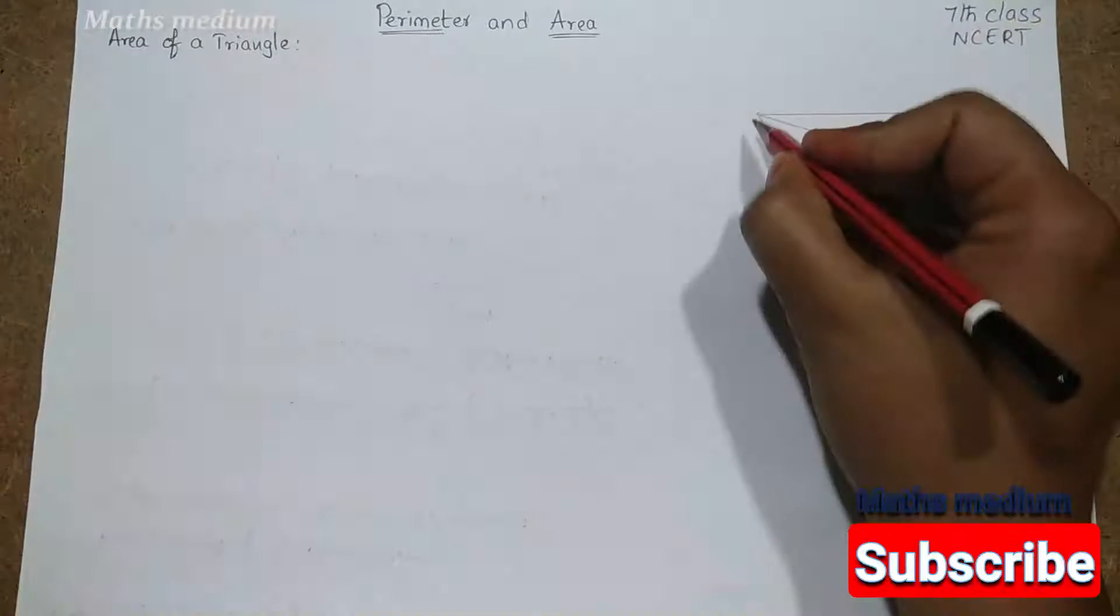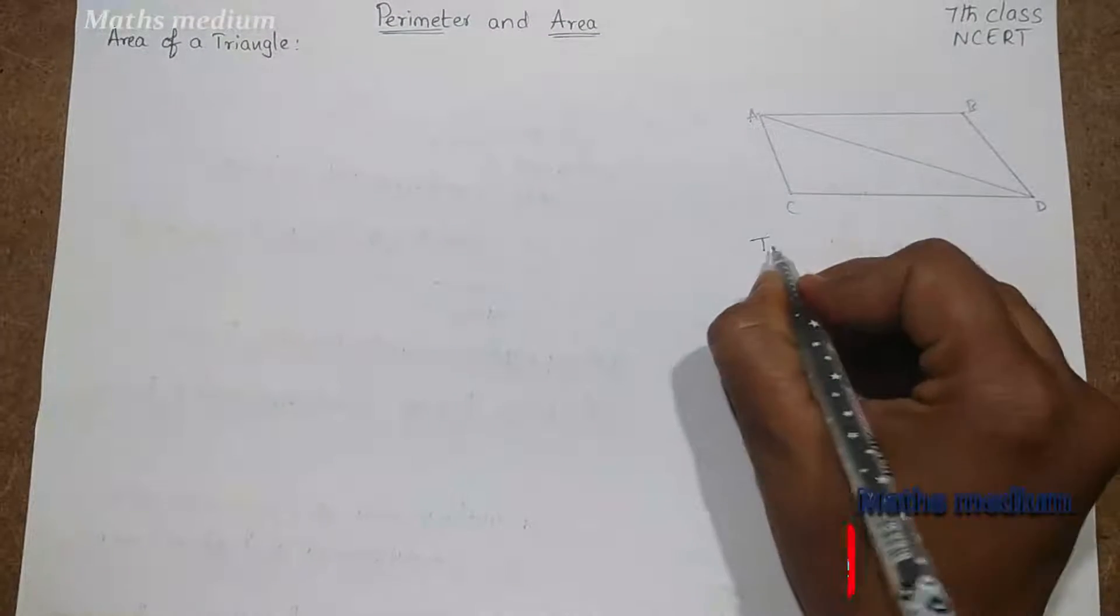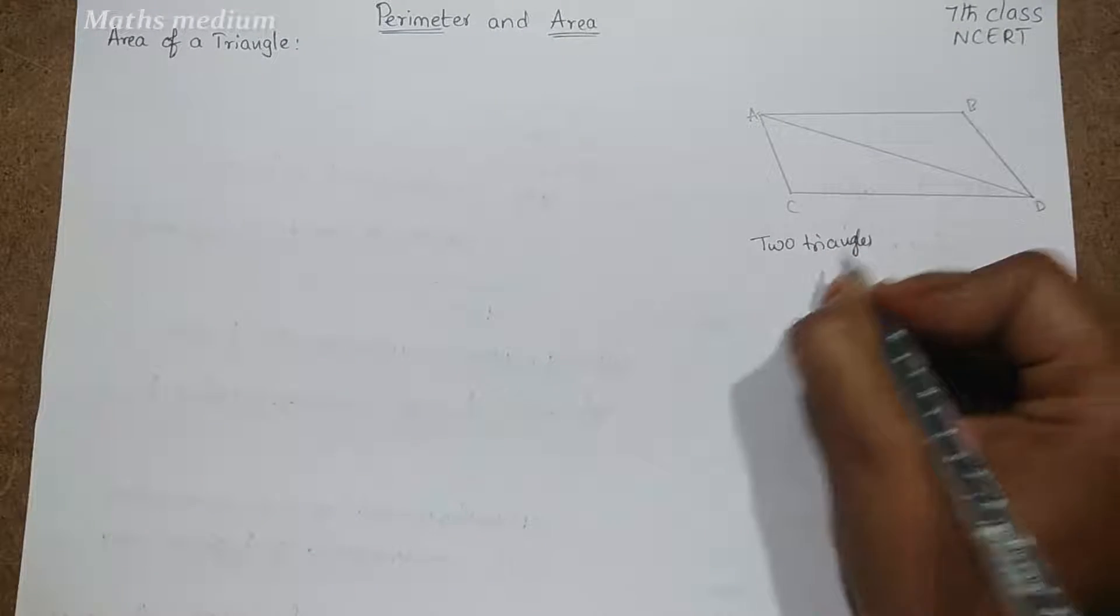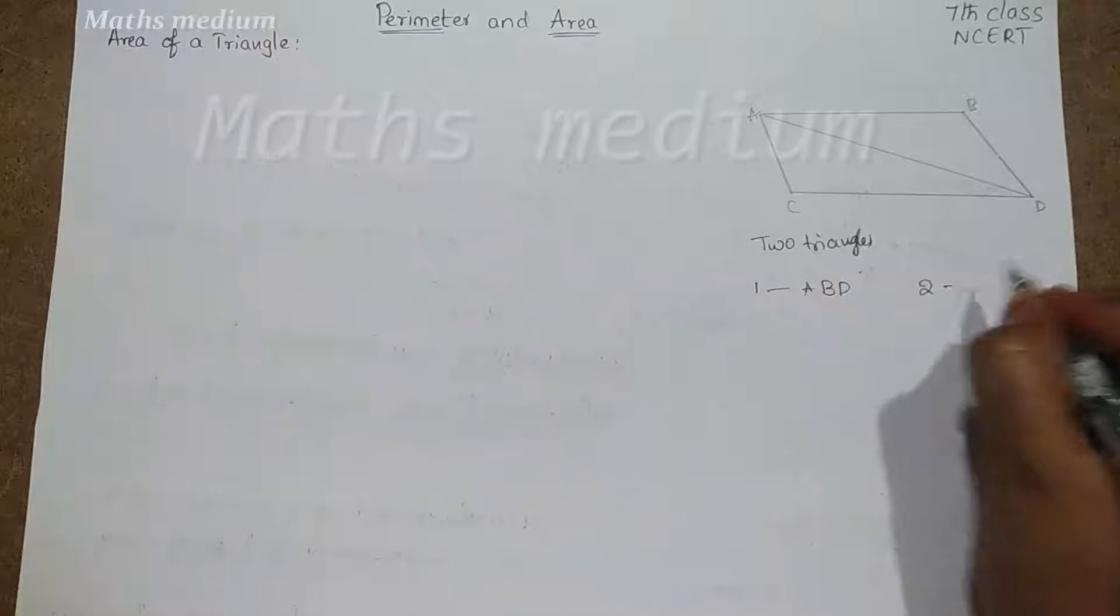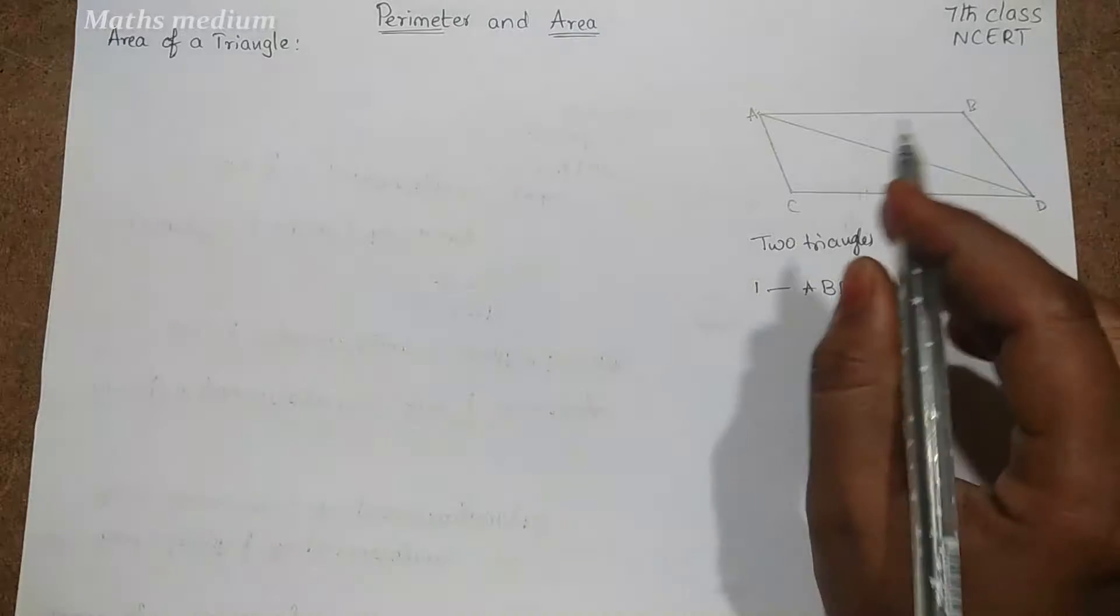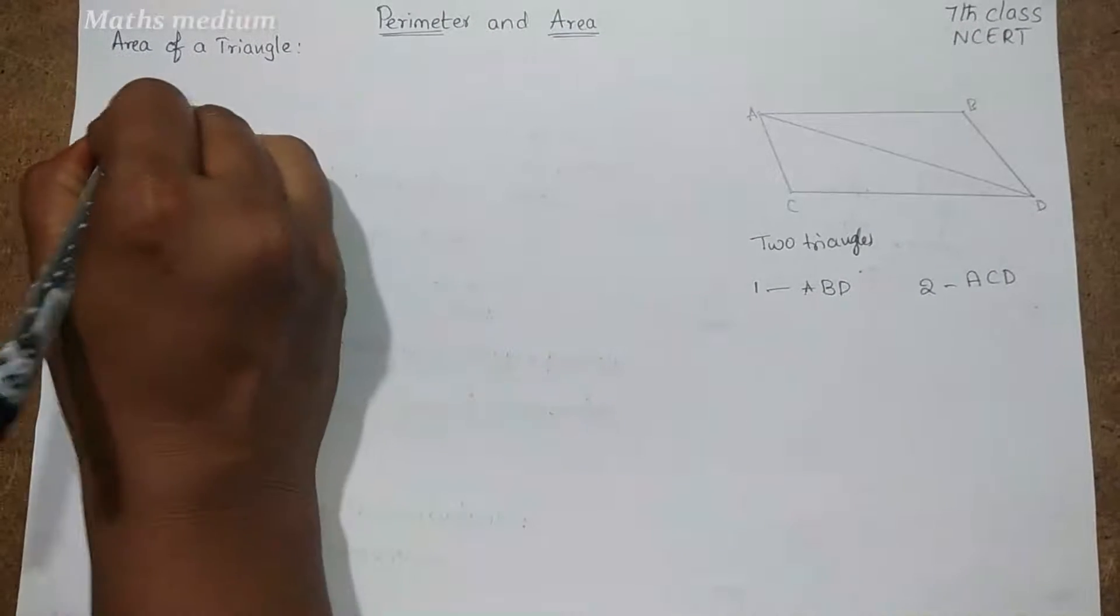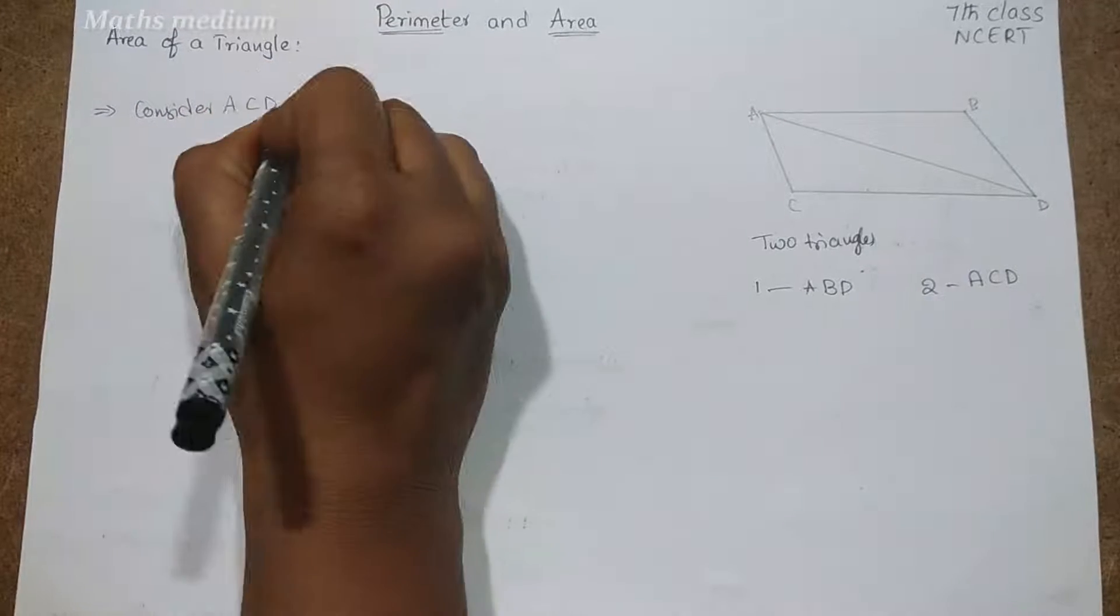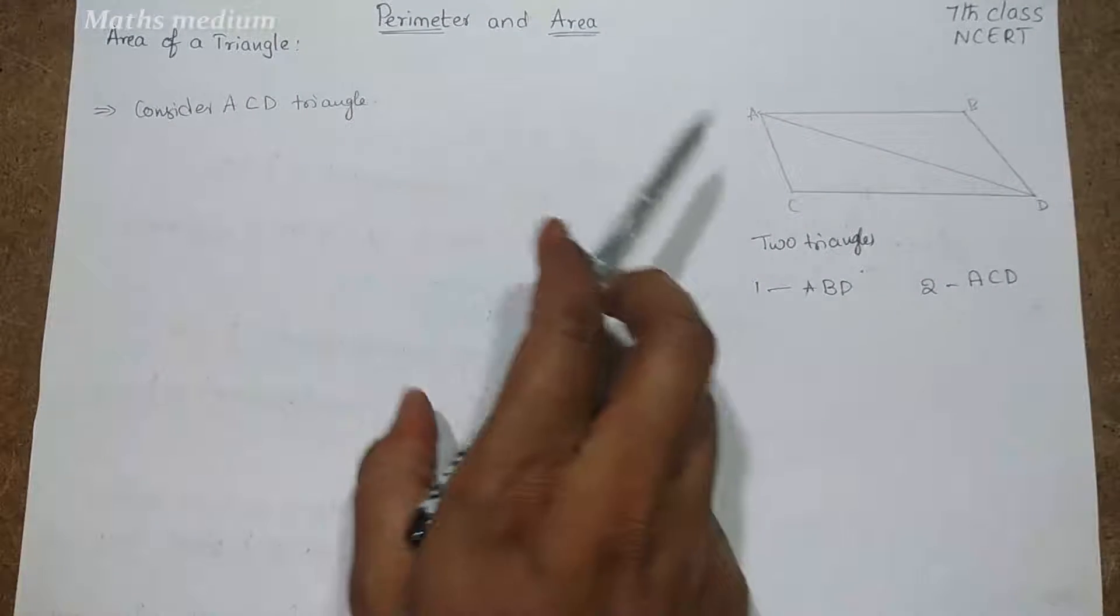Now this is ABCD. Here we are having two triangles, right? One is ABD and second one is ACD. But now see, I am considering here ACD triangle. So here consider ACD triangle.